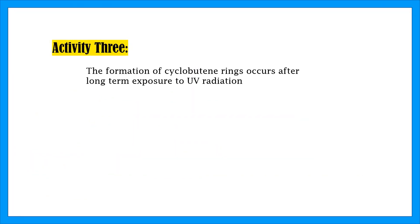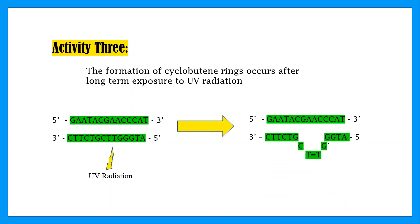In this final activity, we're looking at cyclobutane rings. Remember that they are caused by thymine dimers after long-term exposure to UV radiation. Here we can see a DNA sequence as it's exposed to UV radiation. Once the thymine dimers occur, we see the formation of a cyclobutane ring.